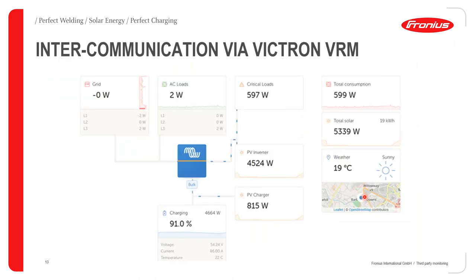This is a screenshot showing how you can communicate with third-party devices using third-party protocols. You can query data directly from the Fronius PV inverter. Although this is usually read-only information, you can get real-time information from the inverter at any point in time.